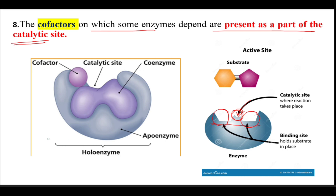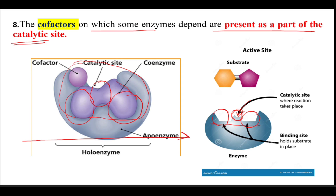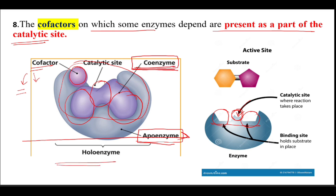Looking at the diagram of an enzyme: the active site is the smaller region in the big enzyme molecule. There are two substrate binding sites and the center one is the catalytic site. This enzyme also requires non-proteinaceous additional factors called co-factors, which can be organic or inorganic. Organic co-factors are called co-enzymes. The protein part of the enzyme is called the apo-enzyme, and the non-protein part is the co-enzyme.